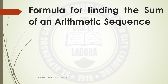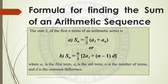Formula for finding the sum of an arithmetic sequence. The sum S sub n of the first n terms of an arithmetic series is given by two formulas. The first formula: S sub n is equal to n over 2 times the quantity of a sub 1 plus a sub n. The second formula: S sub n is equal to n over 2 times the quantity of 2 times a sub 1 plus n minus 1 times d. Where a sub 1 is the first term, a sub n is the nth term, n is the number of terms, and d is the common difference.